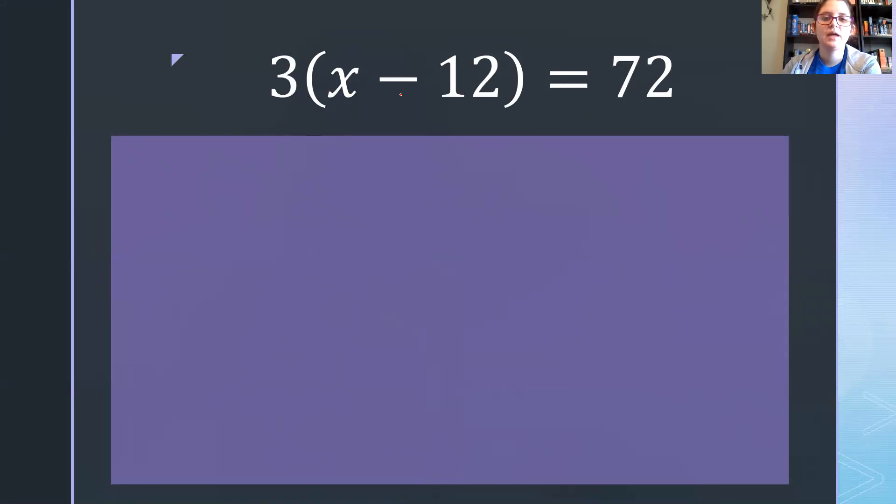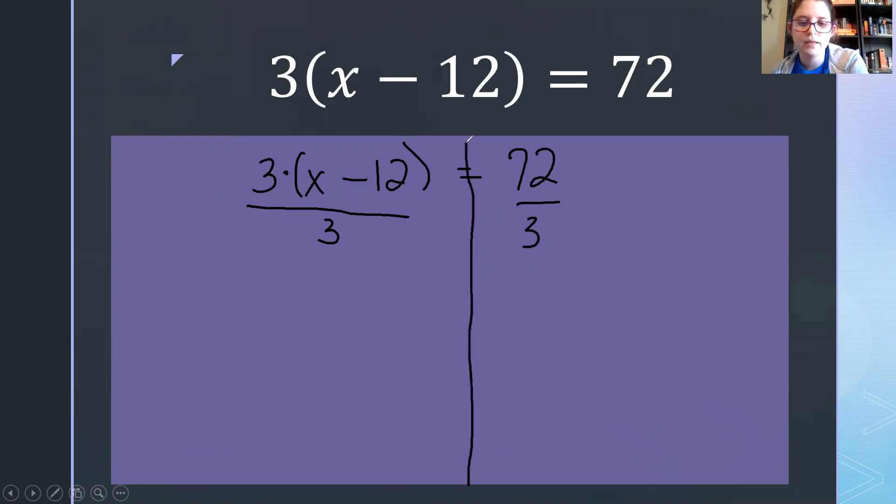So we have 3(x - 12) equals 72. So the first thing we want to do is I'm going to rewrite the problem in the box. Hopefully while you're writing it down so you can work it out with me. I'm going to say that the 3 is being multiplied whenever we see a number with a parenthesis that's multiplication. We undo multiplication with division. And I'm going to go ahead and drop in my line here just to keep my two sides of the equal sign separate. Divide by 3 times 3 cancels.